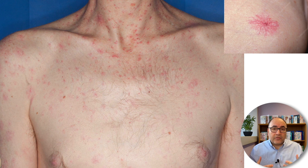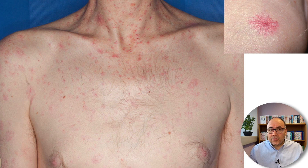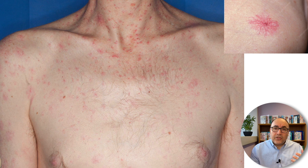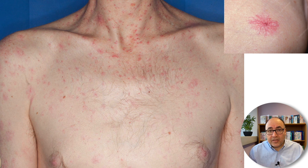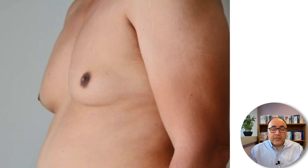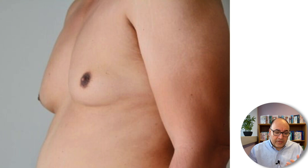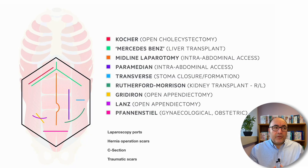Once done with the neck nodes, move on to the chest. There are two things to look for: first, spider naevi — most people are allowed a few, but with portal hypertension due to liver cirrhosis you can get quite a few. These are dilated cutaneous arterioles: if you press on them they blanch, and when you release, blood rushes back in, distinguishing them from telangiectasia or a pigmented mole. In men, also look for gynaecomastia — feminisation of the male breast tissue — associated with liver disease and disruption of liver enzymes.